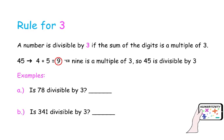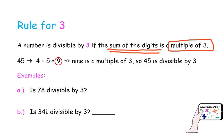What would be the rule of divisibility for 3? A number is divisible by 3 if the sum of the digits of your number — that's important — is a multiple of 3. Here's a quick example: we are checking if 45 is divisible by 3. We add the digits: 4 plus 5 is 9. 9 is a multiple of 3, so we can confirm that 45 is divisible by 3.